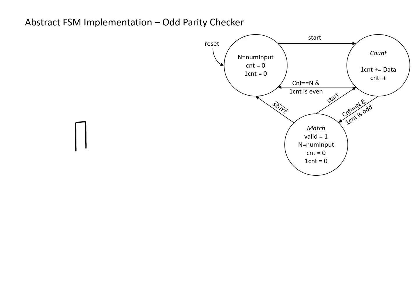We'll start with the n value, which needs to store the value of the n input, so we need a register for this. We need to be able to enable this register because we only write to it some of the time. We don't know how many bits this is — it depends on how large a value of n we might deal with. We feed in an input, and the output represents our value n. This register has a clock, and it will be enabled by a control signal which I'll label n_enable.